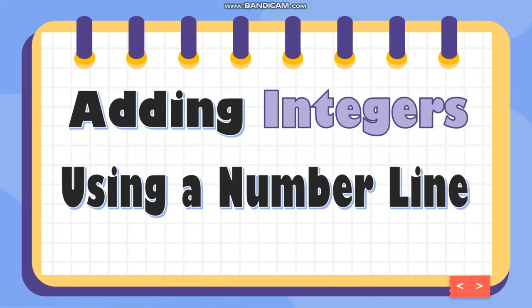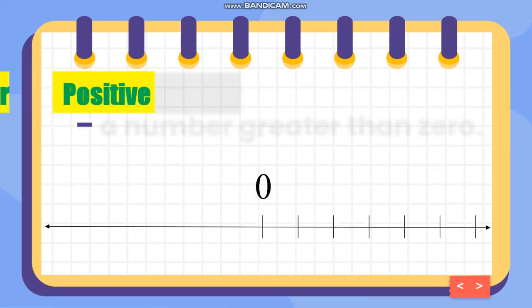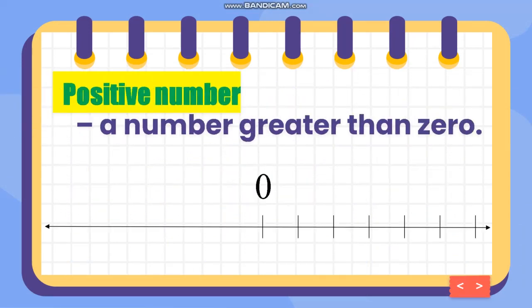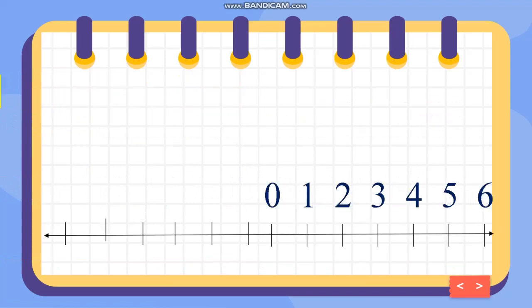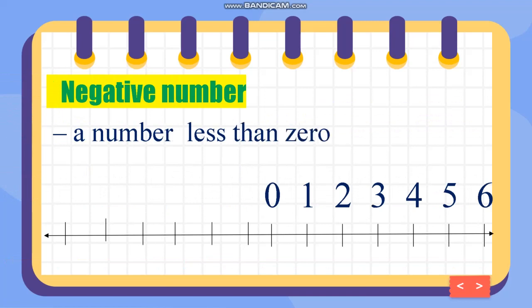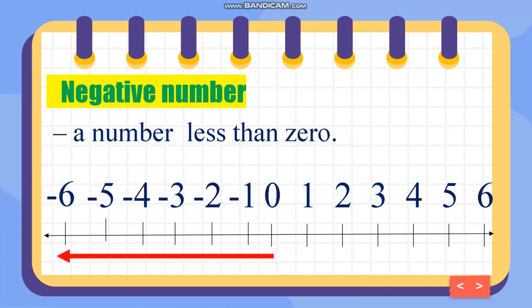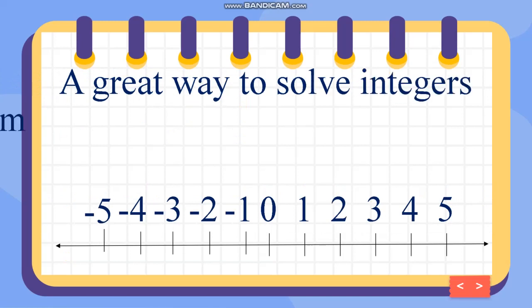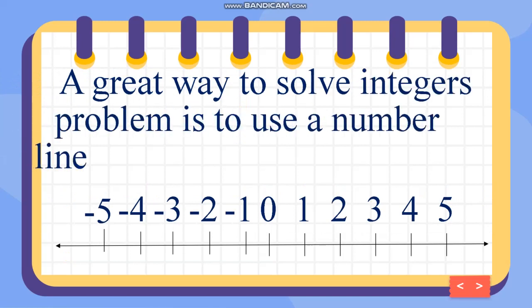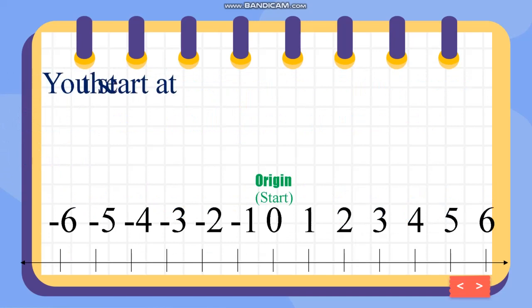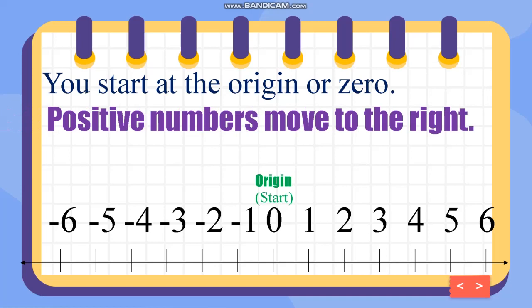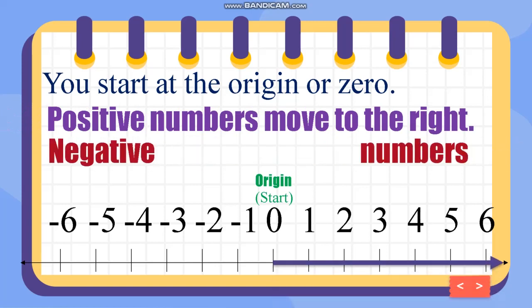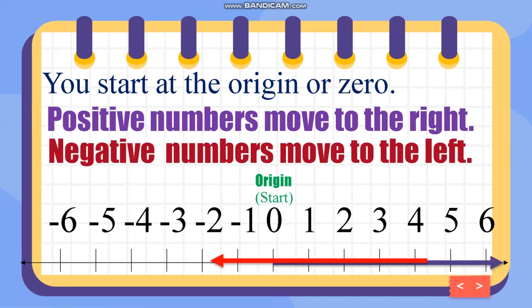Adding integers using a number line. A positive integer is a number greater than zero. A negative number is a number less than zero. A great way to solve integer problems is to use a number line — you start at the origin or zero. Positive numbers move to the right and negative numbers move to the left.